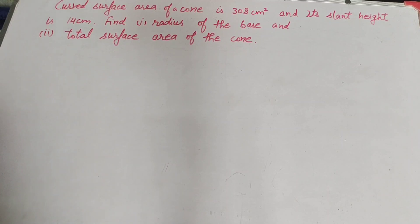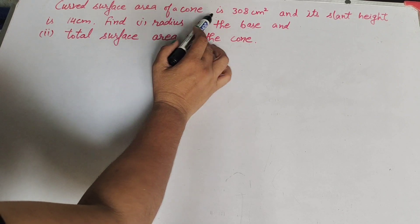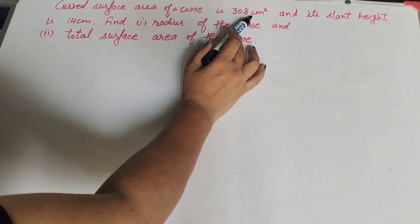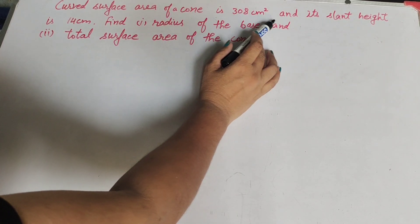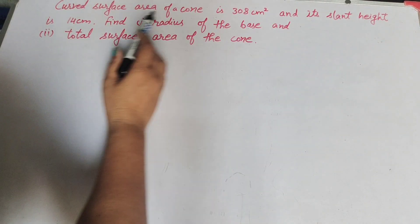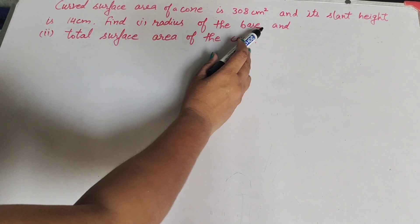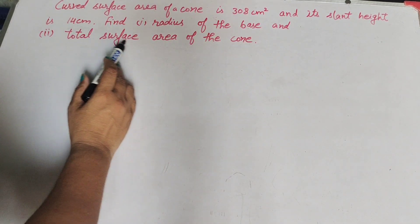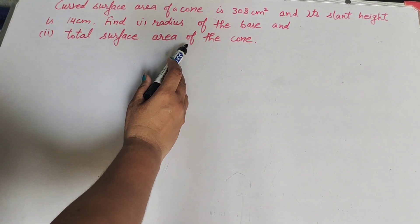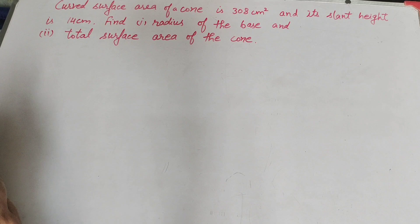Hello friends, welcome to my channel. In this video we discuss: the curved surface area of a cone is 308 cm² and its slant height is 14 cm. Find the radius of the base and the total surface area of the cone.